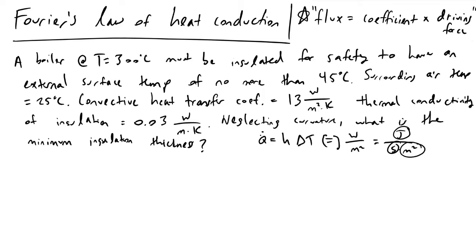Working through the example: we have a boiler running at 300°C and we want to insulate it so that a worker touching the surface of the insulation feels no more than 45°C. We're told the ambient air temperature is 25°C, the convective heat transfer coefficient is 13 W/m²·K, and the thermal conductivity of the insulation is 0.03 W/m·K. Neglecting curvature, we want to find the required thickness of insulation.